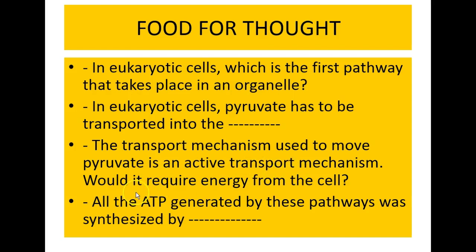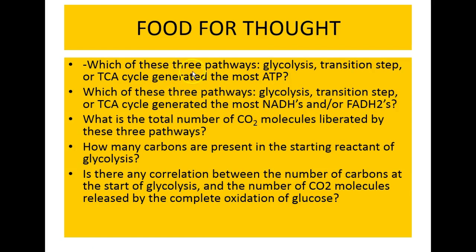In eukaryotic cells, pyruvate has to be transported into the mitochondria. The transport mechanism used to move pyruvate is an active transport mechanism — would it require energy from the cell? All the ATP generated by these pathways was synthesized by a process called what? Which of these three pathways — glycolysis, transition step, or TCA cycle — generated the most ATP? Which generated the most NADH and/or FADH2?